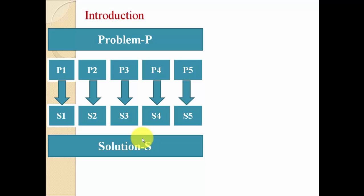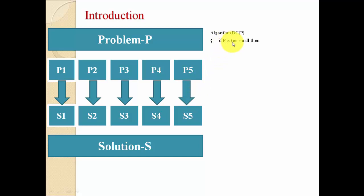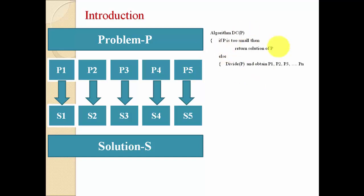If we write an algorithm based on this concept, we call a function divide-and-conquer and pass capital P as the argument. First we check whether P is too small or not. If it is too small, we can directly apply our ad hoc algorithm and find the solution. If it is not small, we divide P into different parts — P1, P2, P3, ... Pn.